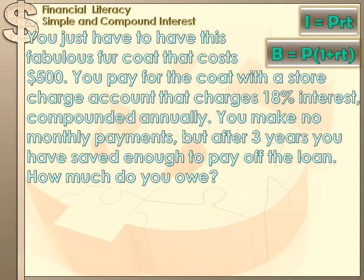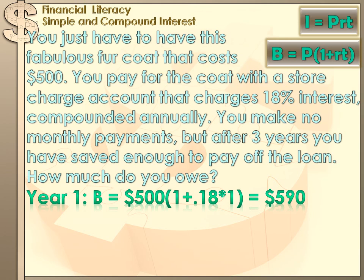Let's calculate this compound interest. The formula is: Balance equals principal times one plus the rate times the period of time — B = P × (1 + R × T). In year one, the principal is $500. After one year you owe 18% interest, so: $500 × (1 + 0.18) × 1. After one year you wouldn't owe $500 — you'd owe $590 on the coat.